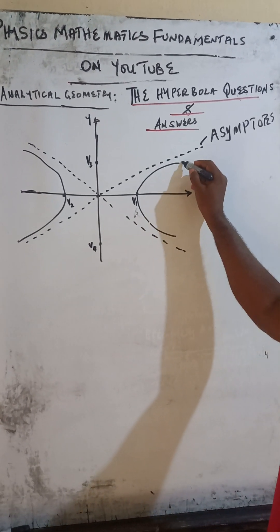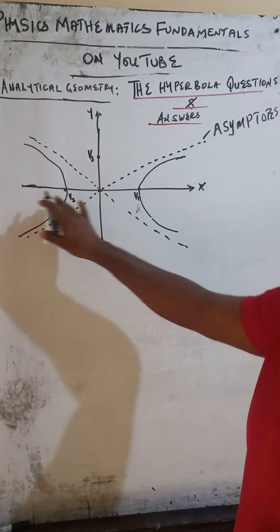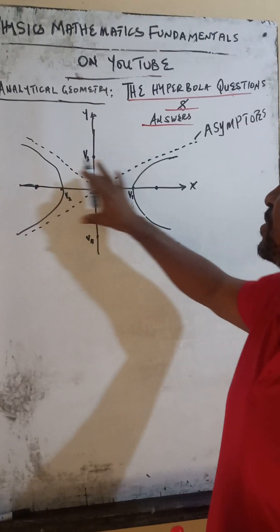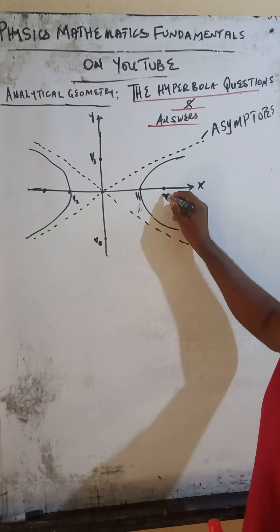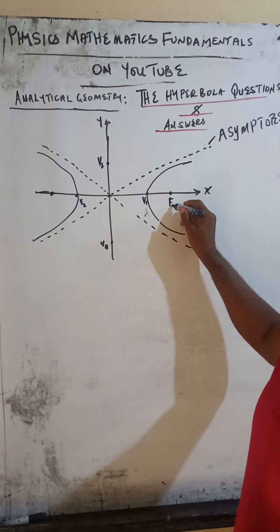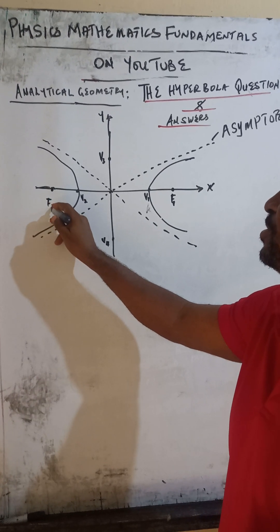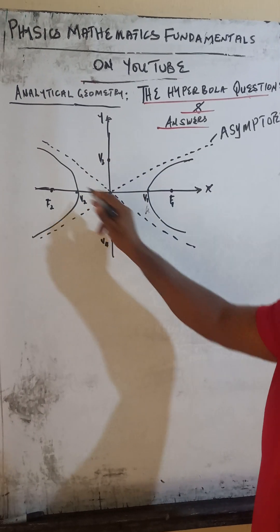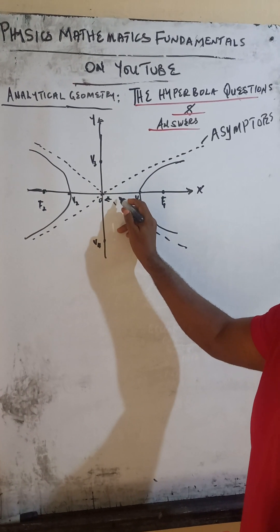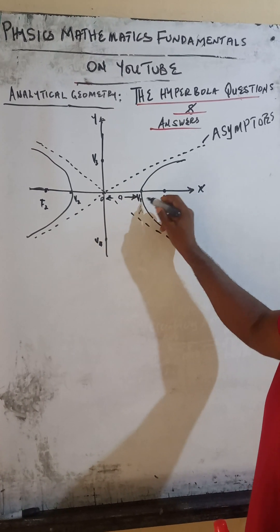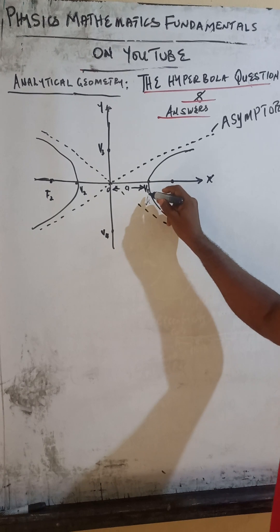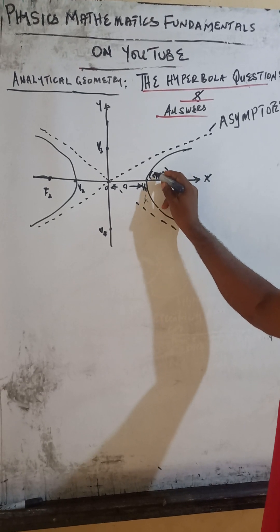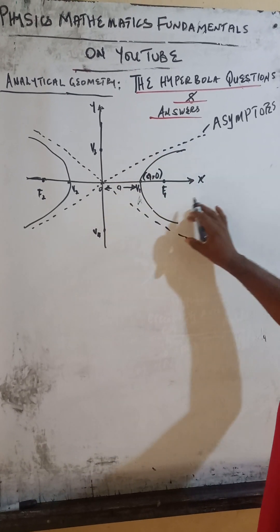This particular hyperbola — these two curves are known as the hyperbola. The hyperbola has fixed points. The one we are considering has the fixed points, called the focal points, on the X-axis. This one is focal point 1, and this place is focal point 2. The distance from the origin — the point of intersection on the vertical and horizontal axes — that distance is A.